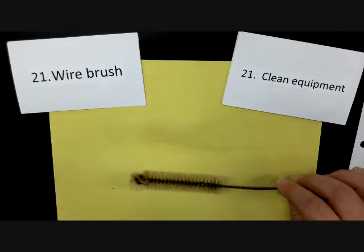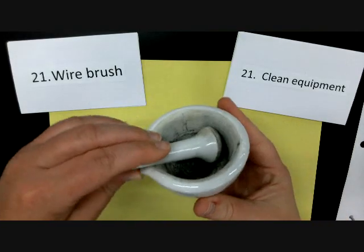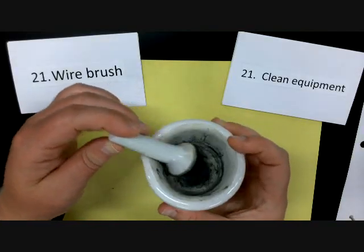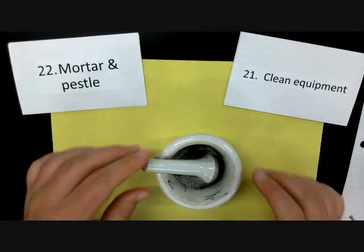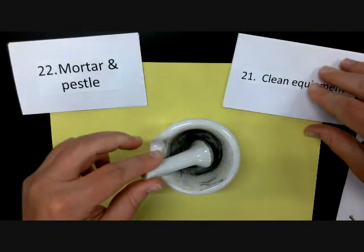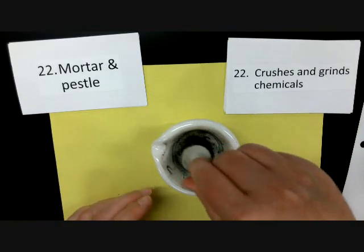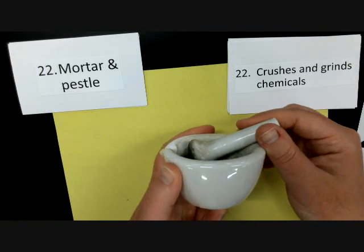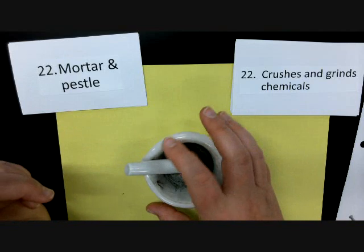Last row — some people know what this one is. It's actually the logo for Walgreens. It's called a mortar and pestle. The bowl part is the mortar and the crusher part is the pestle. A mortar and pestle is used to crush and grind up chemicals. We may only use this once or twice during the school year, but it's always cool to know what a mortar and pestle is called.